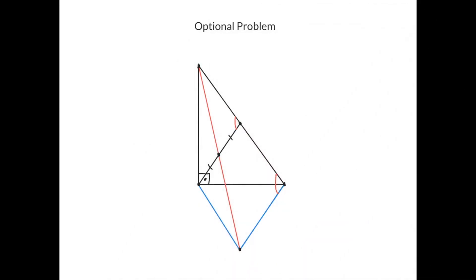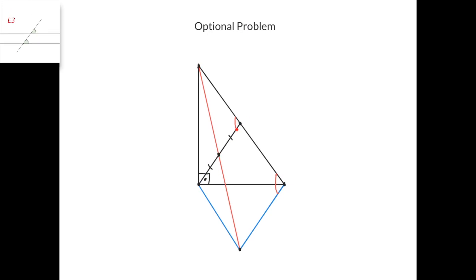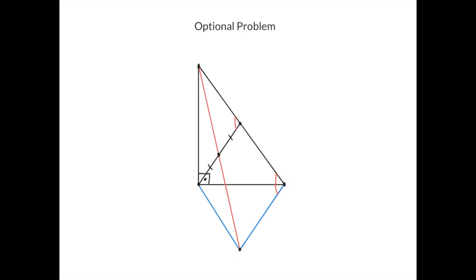Here's the optional problem. We have a triangle, and this here is the midpoint of this side. We drop a perpendicular at this point to this line, which intersects this line at this point. Then we connect this point and this point with a line, and this line intersects the parallel line to this one through this point, at this point here. We need to prove that the length of this blue segment equals the length of this blue segment here.